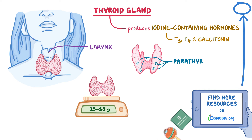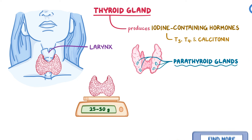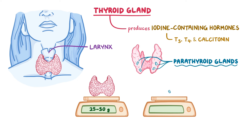The parathyroid glands consist of four small ovoid glands that weigh 30 milligrams each and are located on the posterior surface of the thyroid gland. They're responsible for secreting parathyroid hormone, or PTH for short.